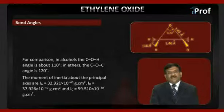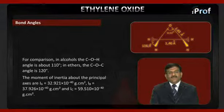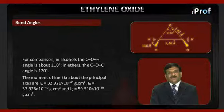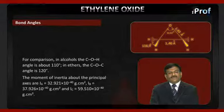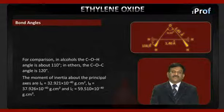The moments of inertia about the principal axes are: 32.921 × 10⁻⁴⁰ g·cm², 37.926 × 10⁻⁴⁰ g·cm², and for the C axis, 59.510 × 10⁻⁴⁰ g·cm².